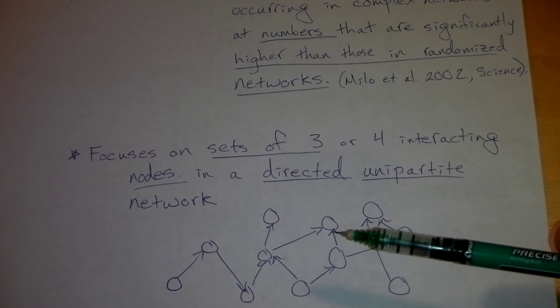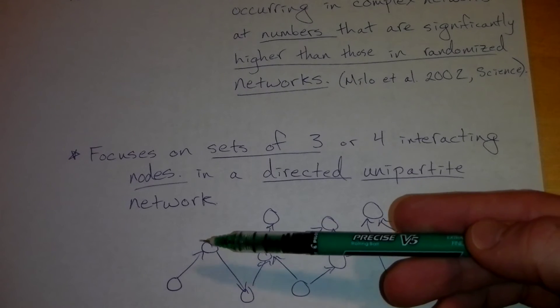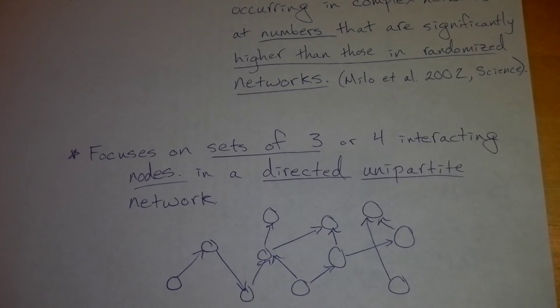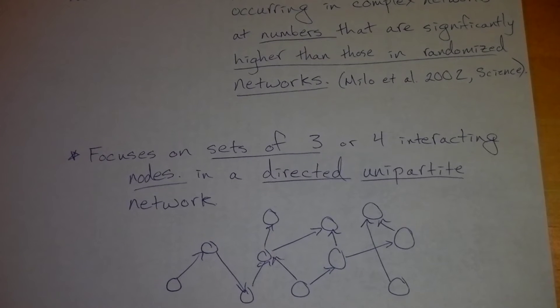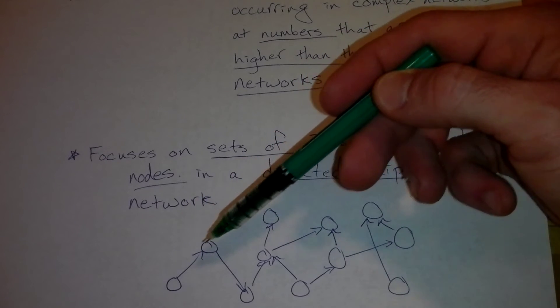So we have our directed unipartite network here. Each one of these links has an arrow, so it's directed. Those links denote the flow of energy through this food web. And essentially, it looks for common patterns that are occurring.